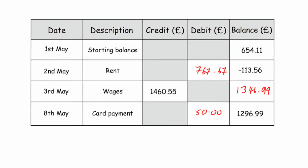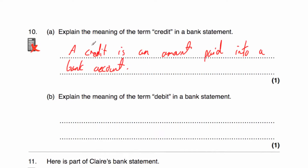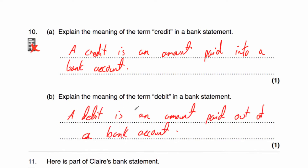Question ten: explain the term credit in a bank statement. A credit is an amount paid into a bank account — it helps the balance go up. Part B: explain the term debit in a bank statement. A debit is an amount paid out of a bank account — it's money that's paid out.